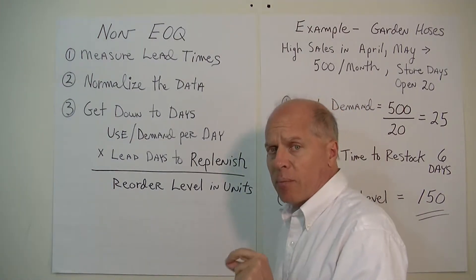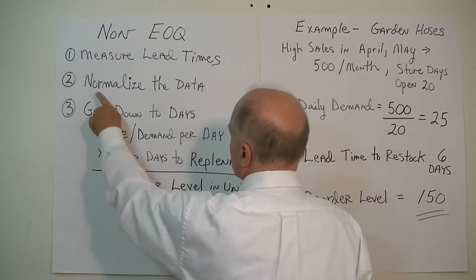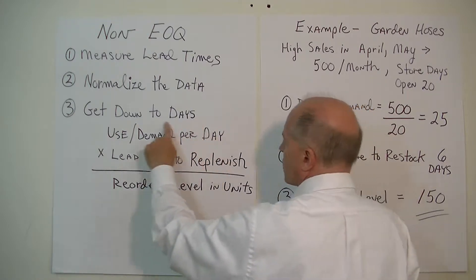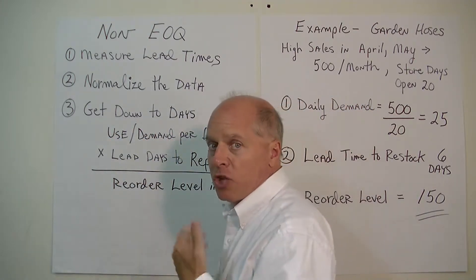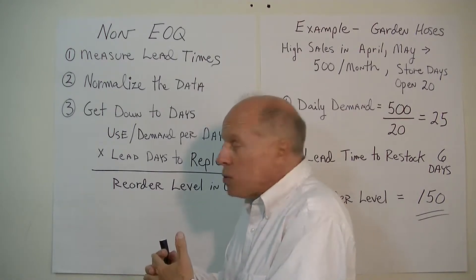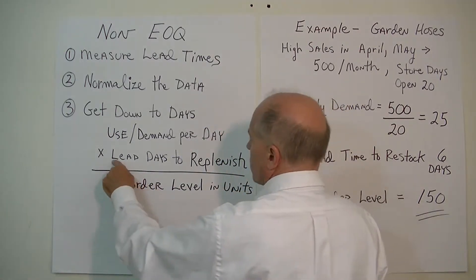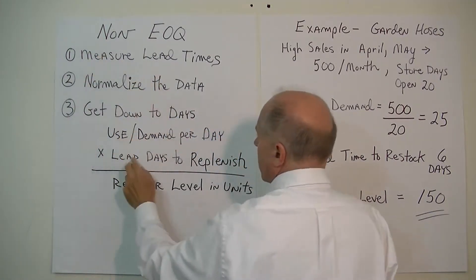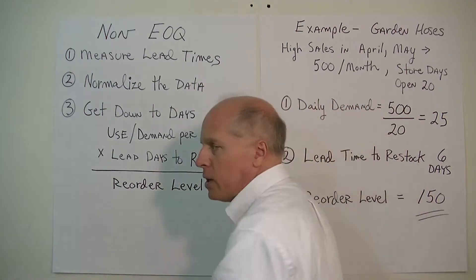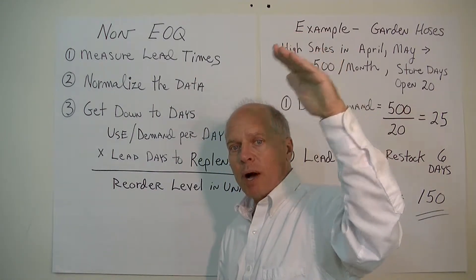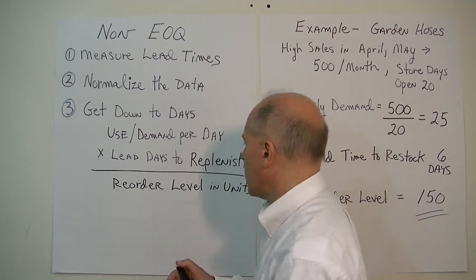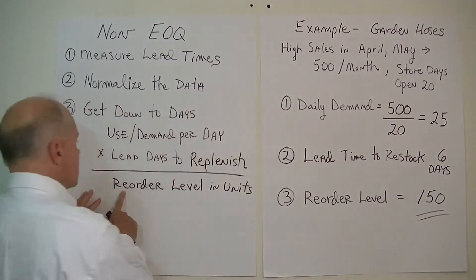Once you normalize the data and remove the anomalies, you want to get down to daily numbers. Figure out how many units you expect to sell per day, or in a manufacturing operation, how much material you use per day. Then measure the lead time. The reorder level is simply the demand per day multiplied by the lead time — that tells you at what inventory level you should trigger a reorder.